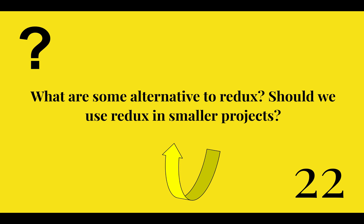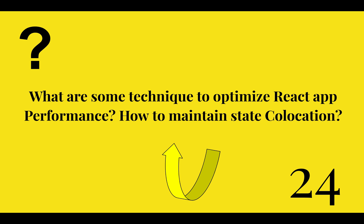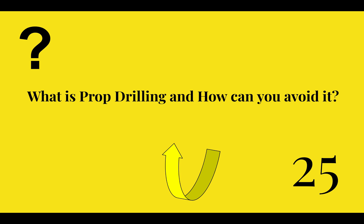How to do code splitting in React? What are some alternatives to Redux — should we use Redux in smaller projects? Do hooks work in static typing? Can React hooks be called conditionally? What are some techniques to optimize React app performance and how to maintain state collocation?